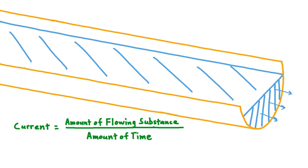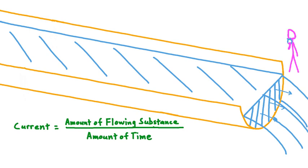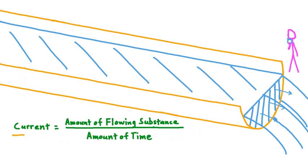It's actually possible to quantify current. Current, which is some collection of objects flowing together, is equal to the amount of the flowing substance divided by an amount of time. If we stood at the end of this trough and counted off some amount of time using a stopwatch — say one second — and collected all of the water that flowed out, we would have measured the current. By knowing those two quantities and taking their ratio, we could calculate the current, and this method applies to any kind of current, whether it's water, gas, or even electric charge.